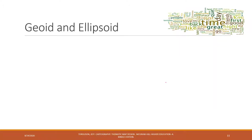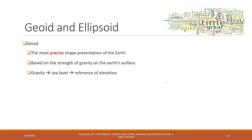The first concept is called GEOID. GEOID is the most precise shape representation of the Earth, based on the strength of gravity at the Earth's surface. GEOID is a mathematical model that captures the shape of the Earth based on that gravity. However, GEOID is very complicated, so if we use GEOID as a baseline to locate our objects, it is very difficult.